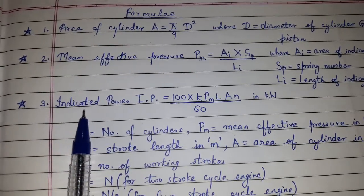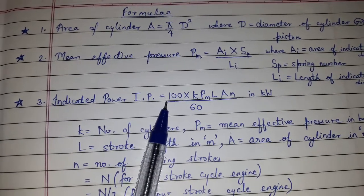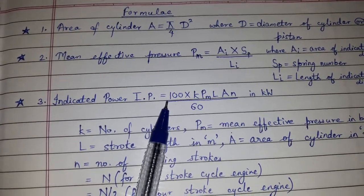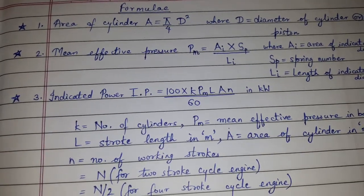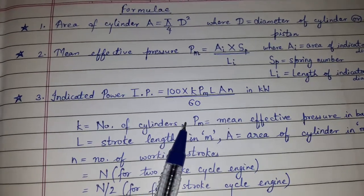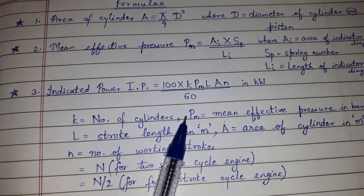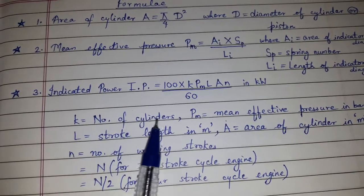Indicated power which is IP is equal to 100 K Pm L A n divided by 60. The unit is in kilowatt where K is the number of cylinders, Pm is the mean effective pressure in bar, L is the stroke length in meter.